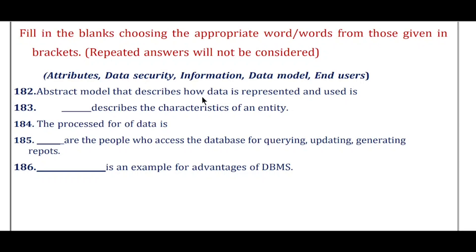Question 182: An abstract model that describes how data is represented and used is called — the answer is data model. Question 183: Dash describes the characteristics of an entity — the answer is attributes. Question 184: Processed data is called — the answer is information. Question 185: Dash are the people who access the database for querying, updating, and generating reports — the answer is end users. Question 186: Dash is an example of an advantage of DBMS — the answer is data security.